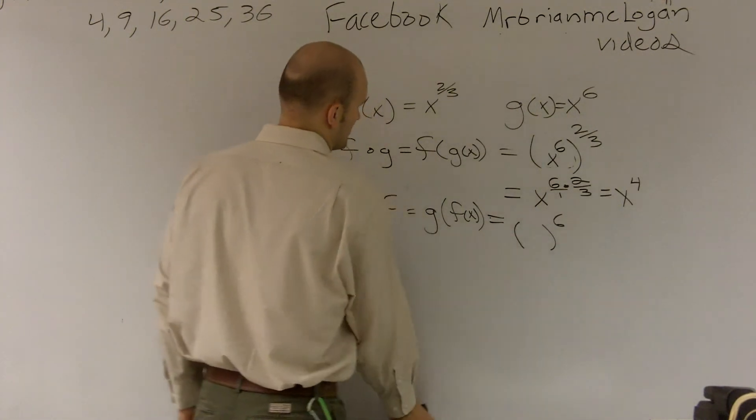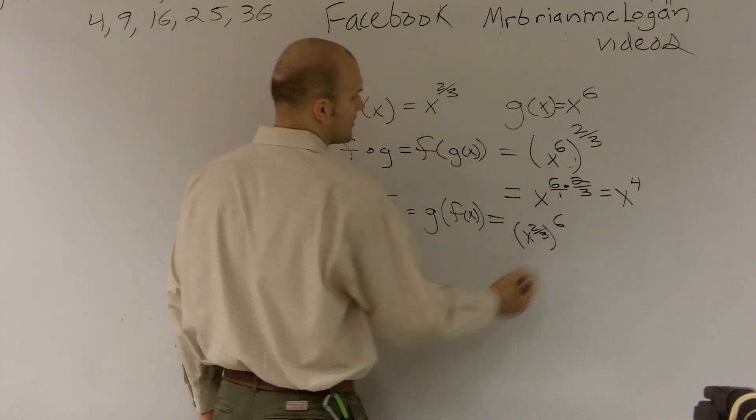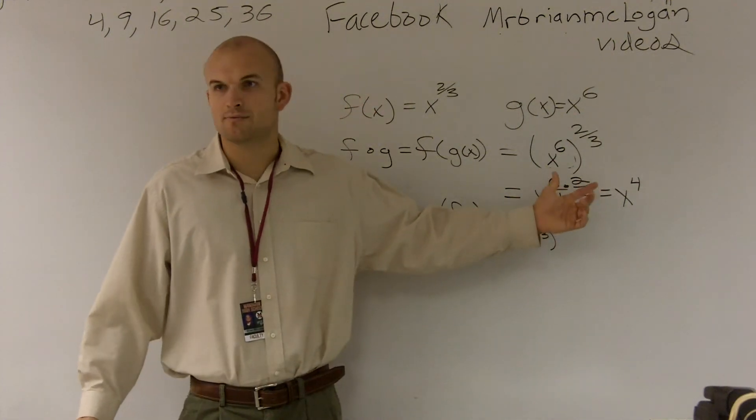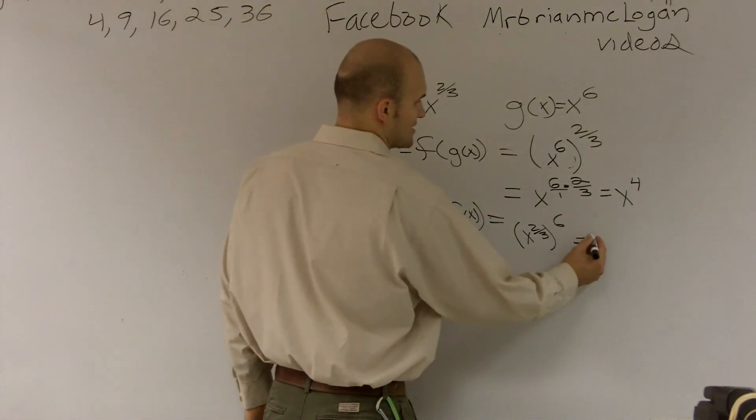So here, it's going to be x to the two-thirds. You guys should know that it doesn't matter how you multiply, two-thirds times six or six times two-thirds. That's going to give you x to the fourth as well.